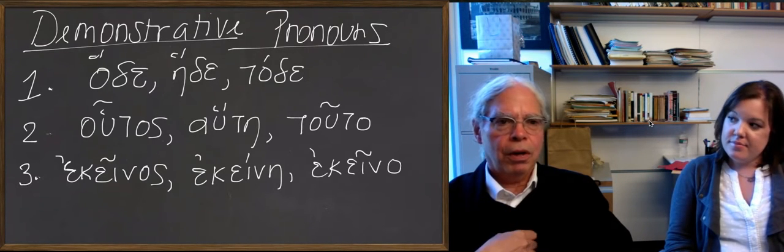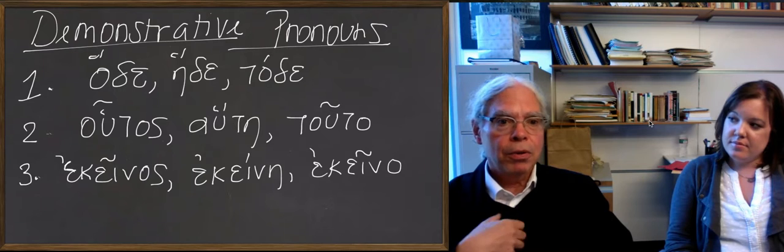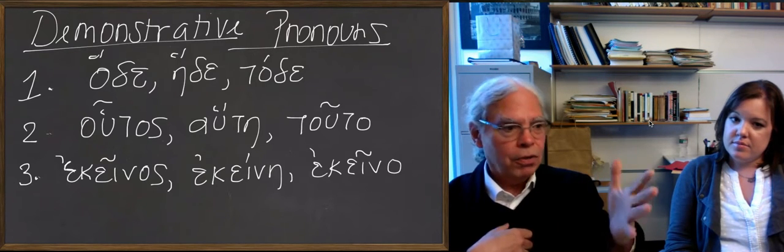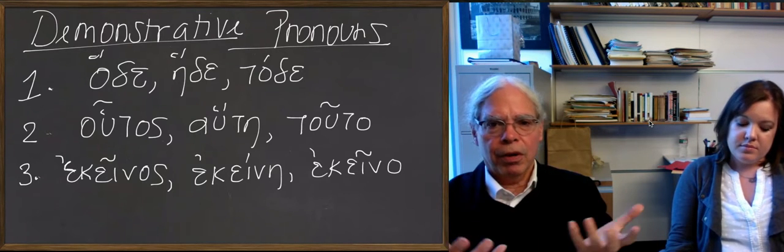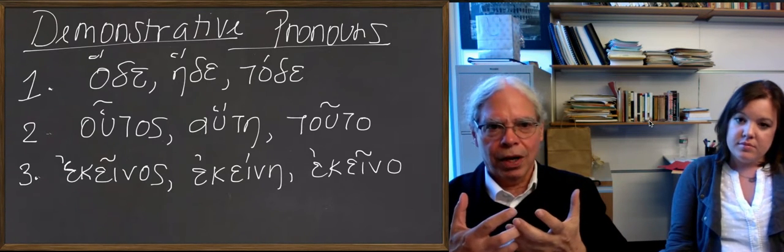In other words, hāde really means this of mine, houtos means this of yours, and ekeinos means that of the third person, his or hers or its, okay? Those are the implicit meanings, it's good to know what they are.